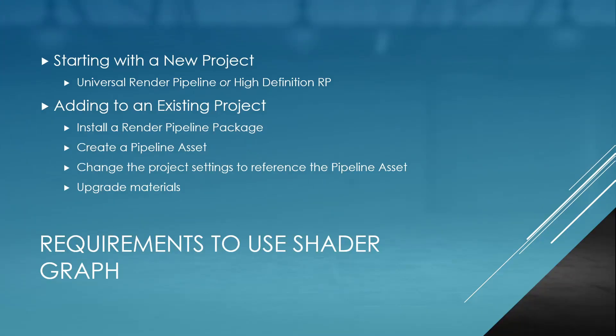To begin, let's talk about how we get shader graph into our project. As I stated, it's not in Unity by default — if you do a standard 3D project you won't be able to use shader graph to modify it. The easiest way is to start with a new project in Unity 2019. You can still do this in 2018, but 2019 has the universal render pipeline and the high definition render pipeline. So in 2019 you want to start a new project and select either the universal render pipeline or the high definition render pipeline.